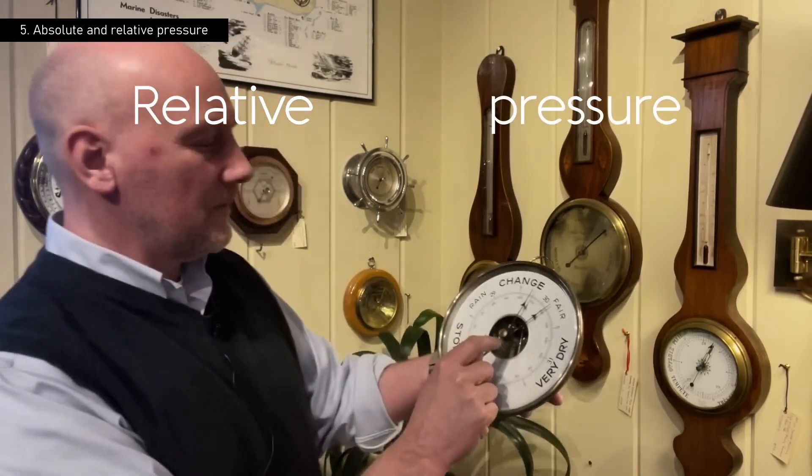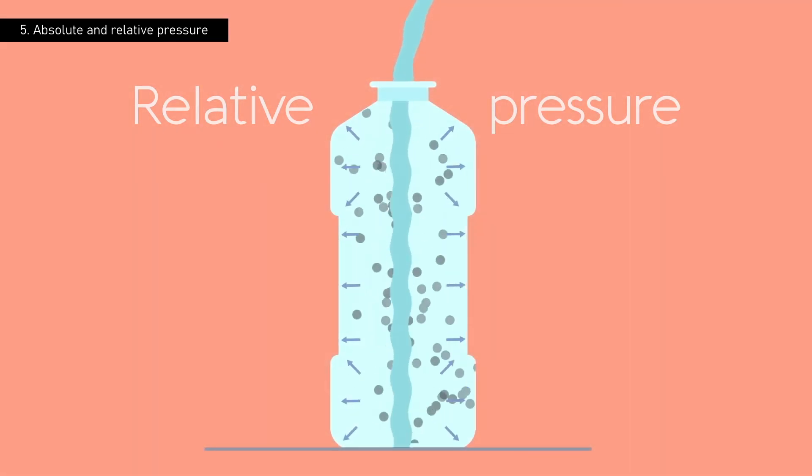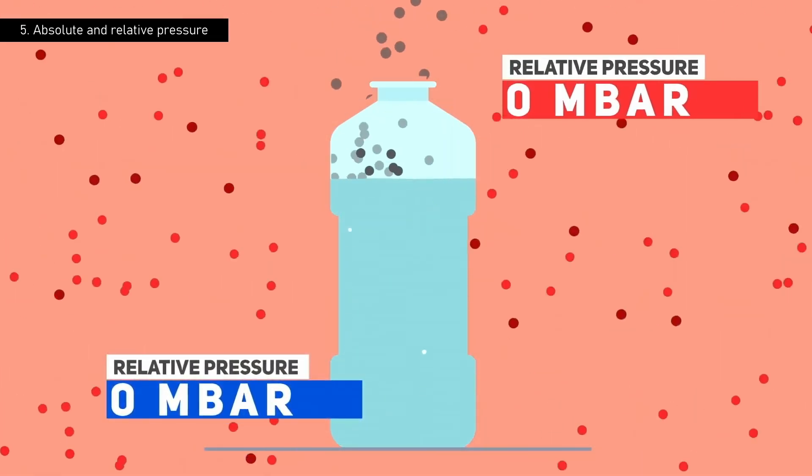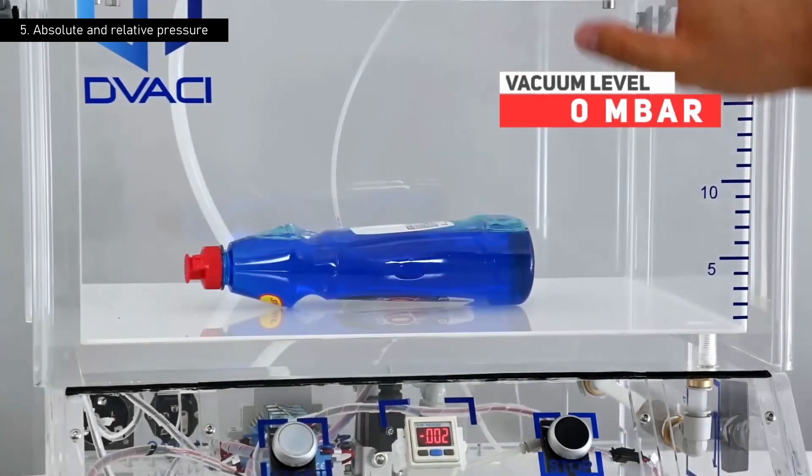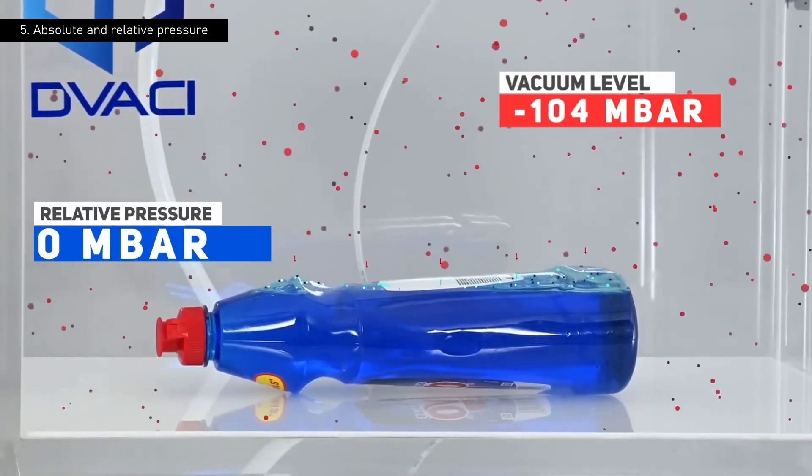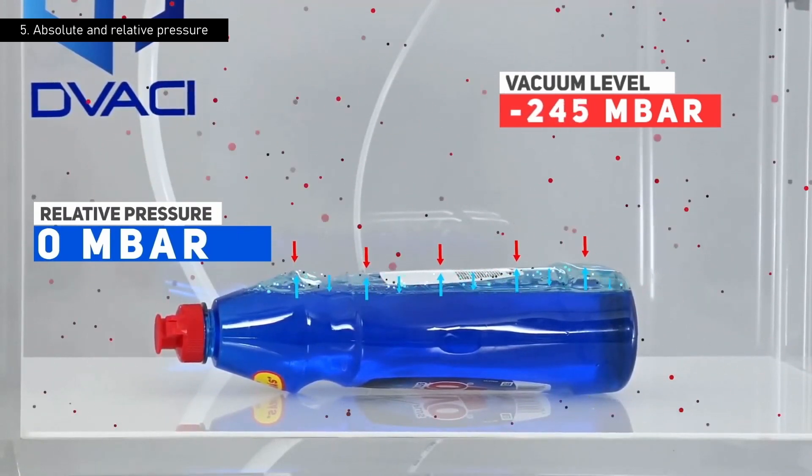On the other hand, relative pressure offers a comparative perspective, measuring the difference between the pressure inside a system and the surrounding atmospheric pressure. In our vacuum chambers, when we talk about creating a vacuum, we refer to reducing the internal pressure below the external atmosphere, reflected in negative values on the relative pressure scale.